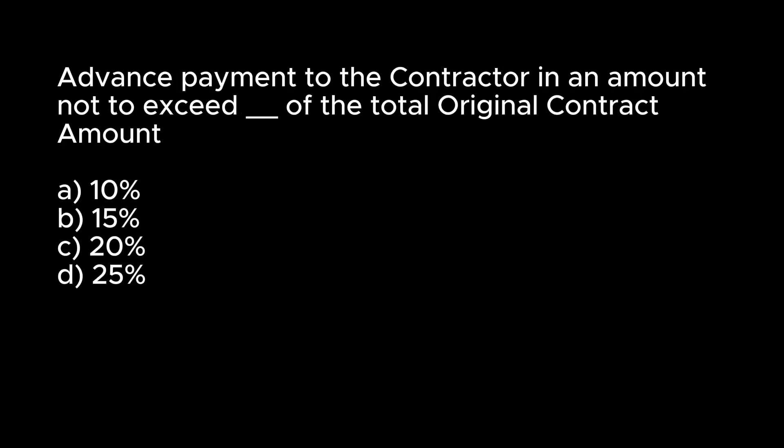Advance payment to the contractor in an amount not to exceed blank of the total original contract amount. A. 10%. B. 15%. C. 20%. D. 25%. Answer: B. 15%.